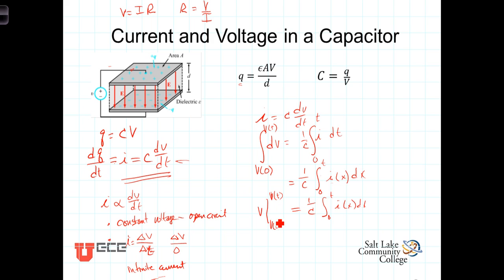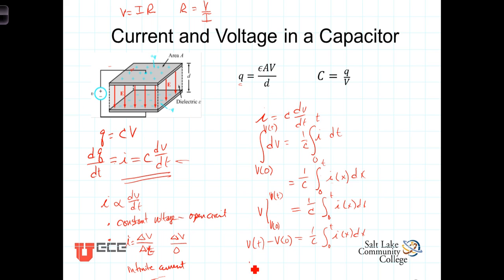Evaluating the left-hand side at the upper and lower limits, we get V(t) minus V at the lower limit — the initial voltage — is equal to 1 over C times the integral from 0 to t of i(x) dx. Adding the initial voltage to both sides, we get the expression for V as a function of time: 1 over C times the integral from 0 to t of i(x) dx, plus V₀.